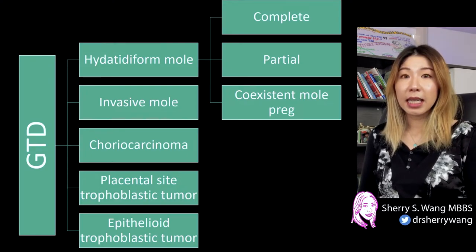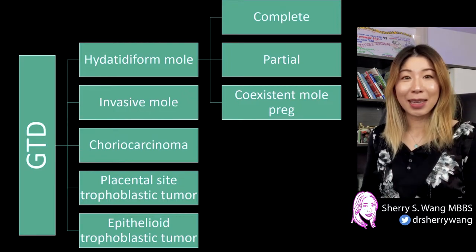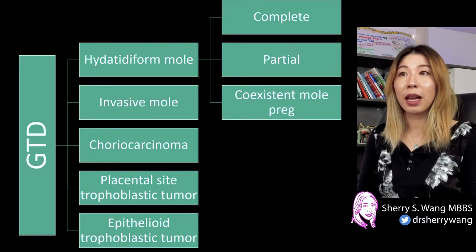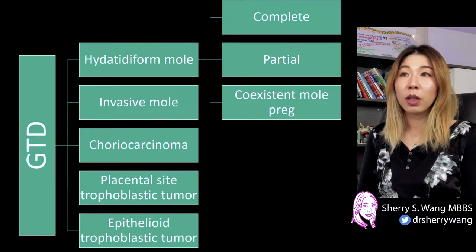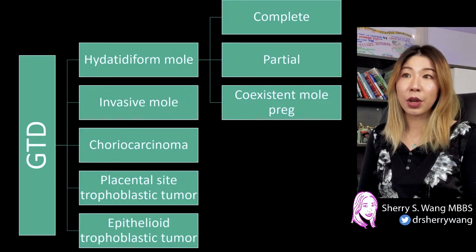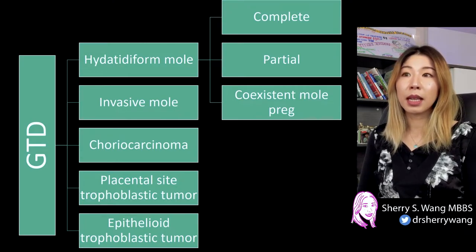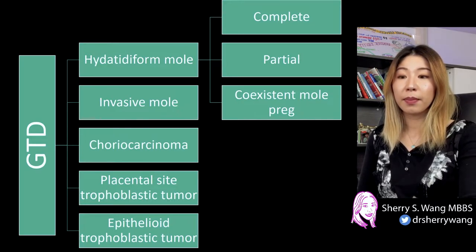Other entities underneath this umbrella term are invasive mole, choriocarcinoma, placental site trophoblastic tumor, and epithelioid trophoblastic tumor. On imaging for a complete mole, it is exactly what we saw on the first image.